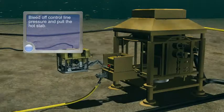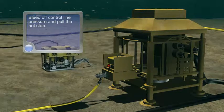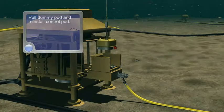Bleed Off Control Line Pressure and Pull the Hot Stab. Pull Dummy Pod and Reinstall Control Pod.